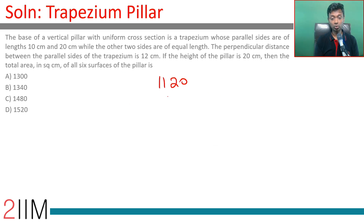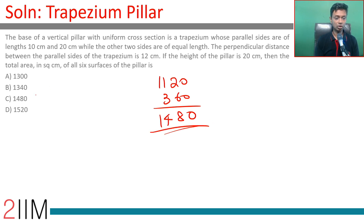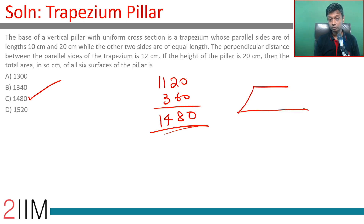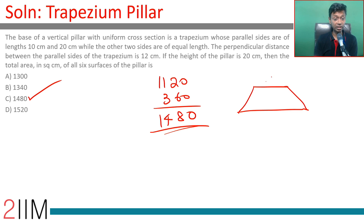Adding 1120 and 360, we get 1480 square centimeters. The key insight is to reimagine the pillar as two trapeziums — one on top, one on the bottom — with four rectangles sitting in between. The four rectangles have sides 10×20, 20×20, and two with sides 13×20. We then add the area of the two trapeziums to get the total surface area.